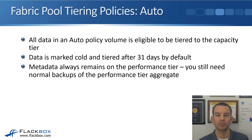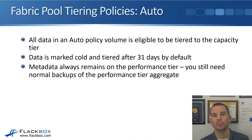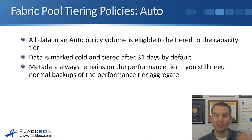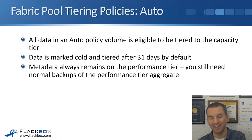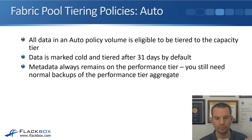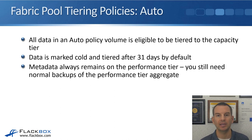The auto policy makes all data in a volume eligible to be tiered to the capacity tier — not just snapshots as in snapshot-only, and not just SnapMirror and SnapVault destination data as in the backup policy. Data is marked cold and tiered after 31 days by default, so any blocks not touched for 31 days will be tiered off, though you can change that timer.